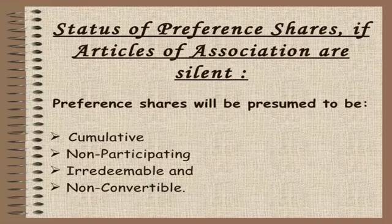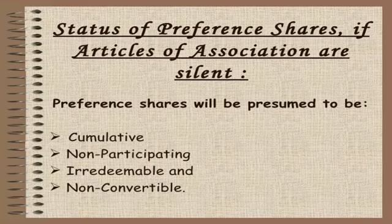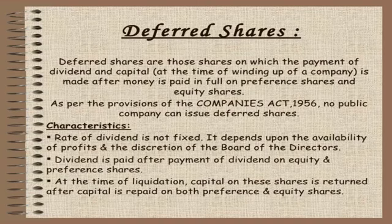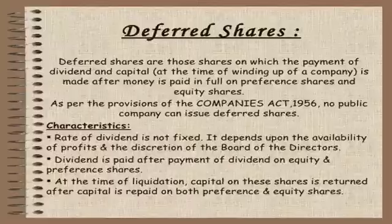The status of preference shares: if articles of association are silent, preferences will be presumed to be cumulative, non-participating, irredeemable, and non-convertible. Deferred shares are those shares on which the payment of dividend and capital at the time of winding up of a company is made after money is paid in full on preferences and equity shares. As per the Companies Act 1956, no public company can issue deferred shares. Rate of dividend is not fixed; it depends upon the availability of profit and at the discretion of the board of directors. Dividend is paid after payment of dividend on equity and preference shares. At the time of liquidation, capital on these shares is returned after capital is repaid on both preference and equity shares.